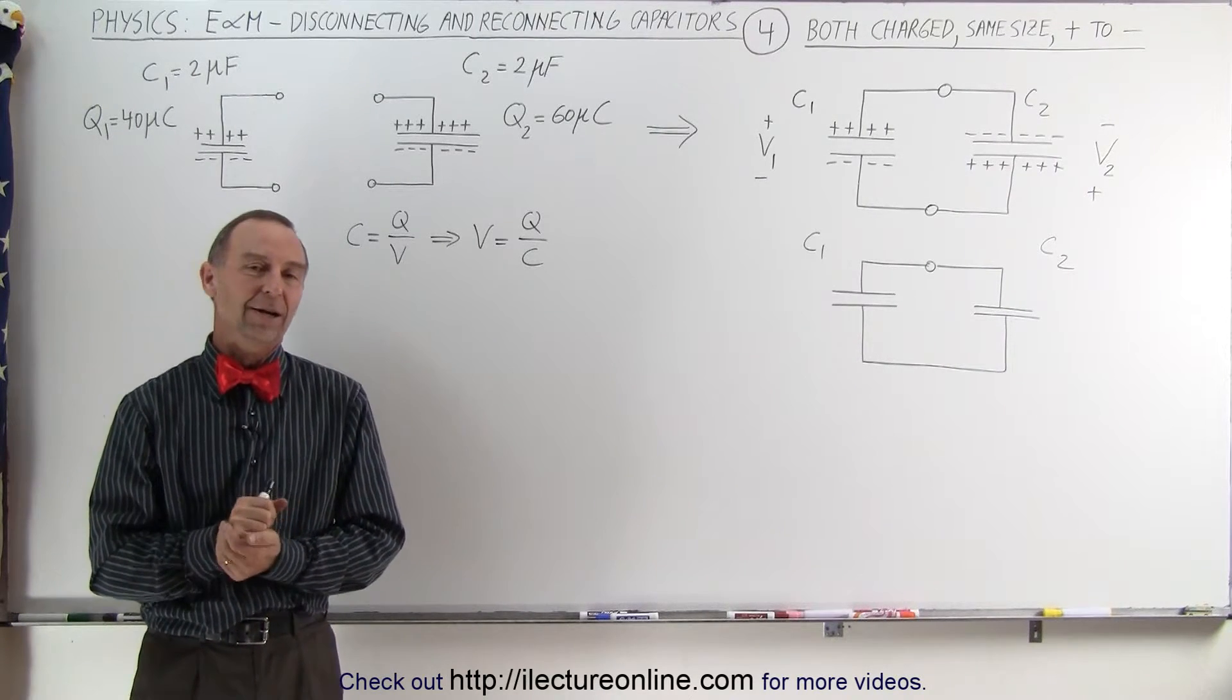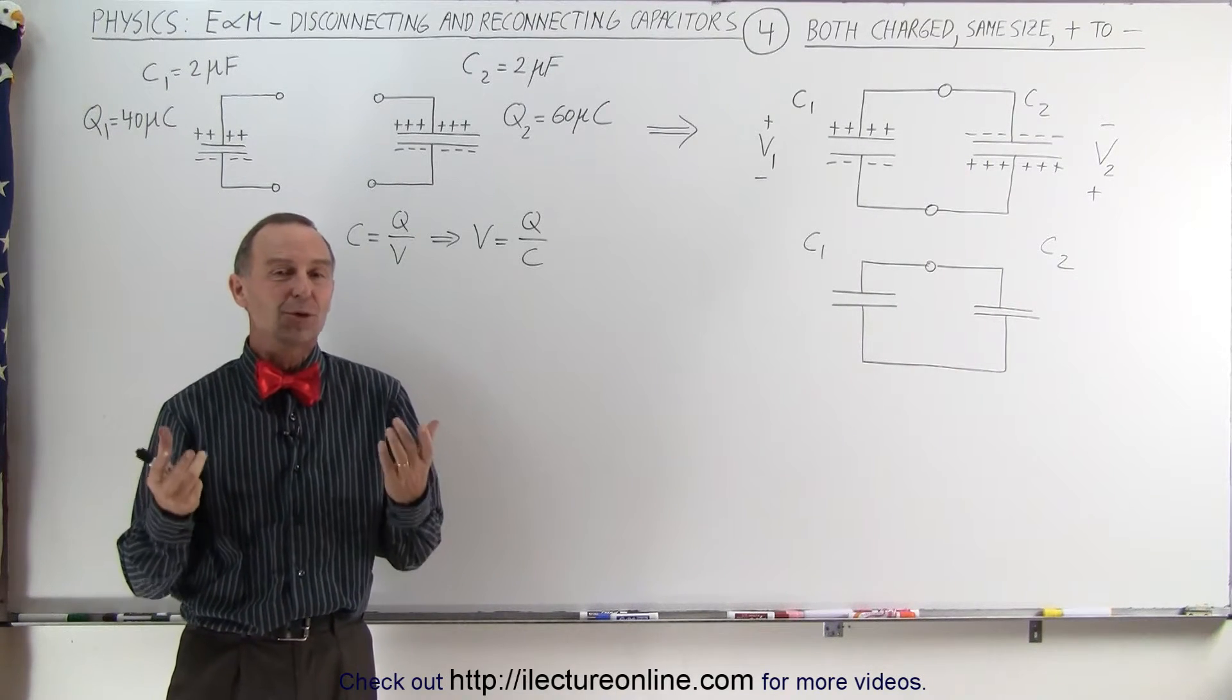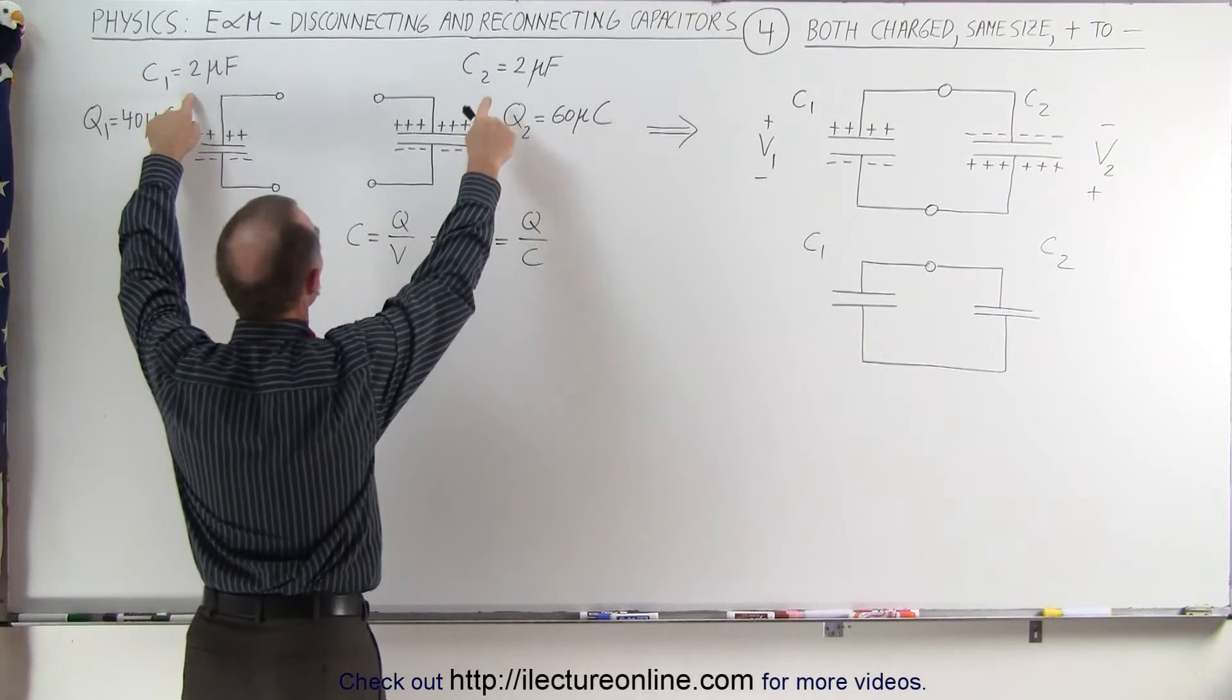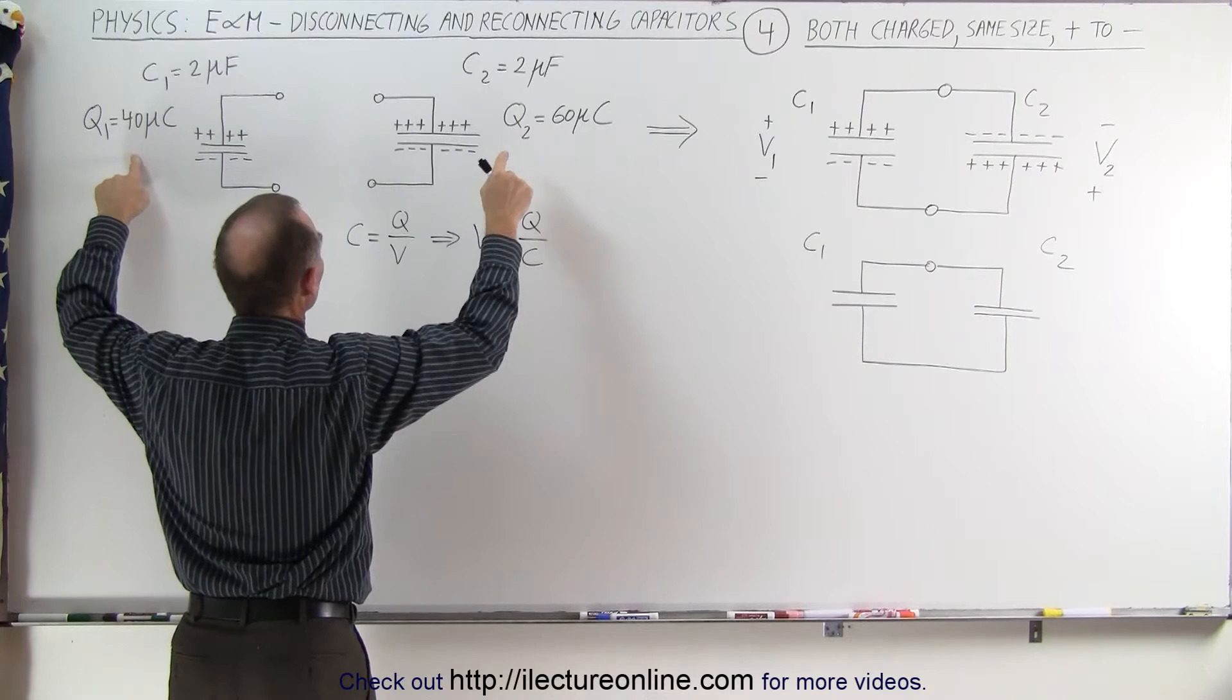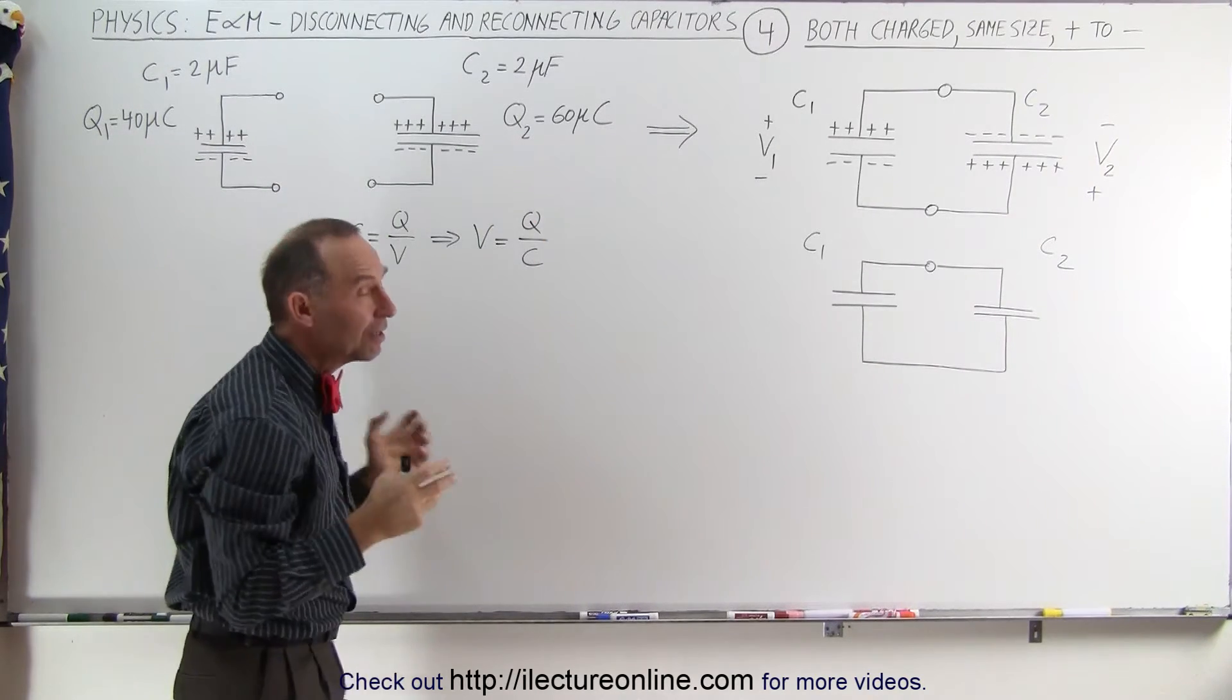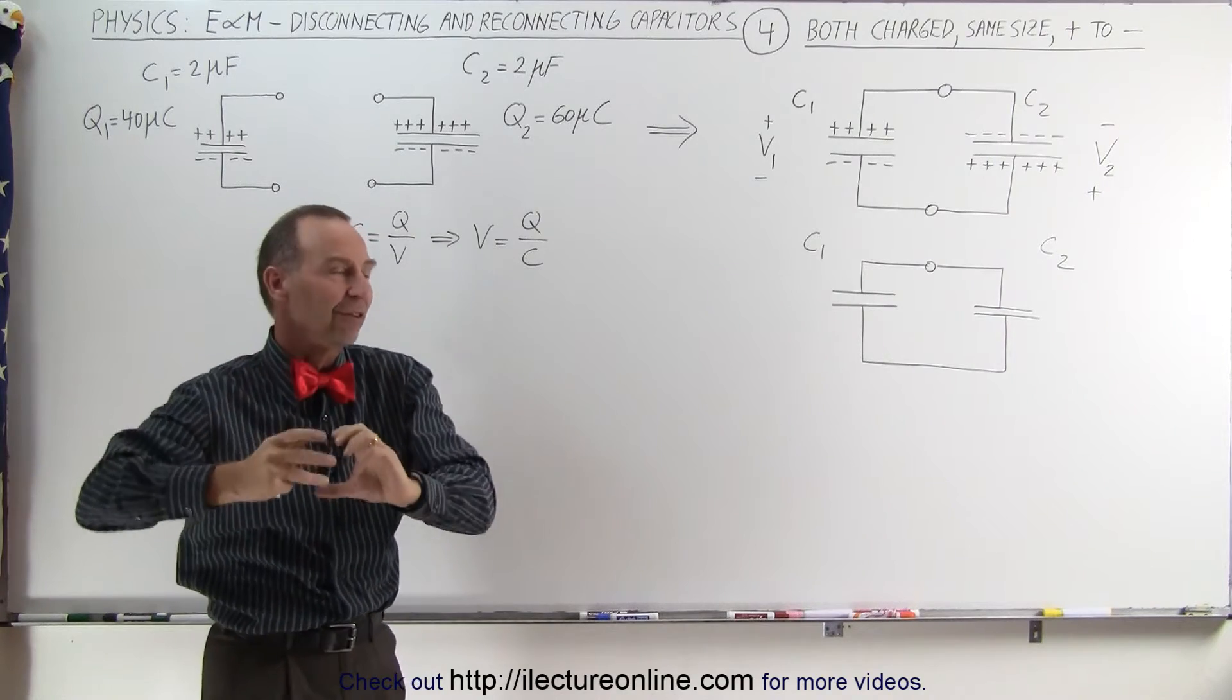Welcome to Electronline. Our next example involves the same two capacitors we had in the previous example. They're both the same size, 2 microfarads, with initial charges of 40 microcoulombs and 60 microcoulombs. The difference now is that we're connecting them differently.